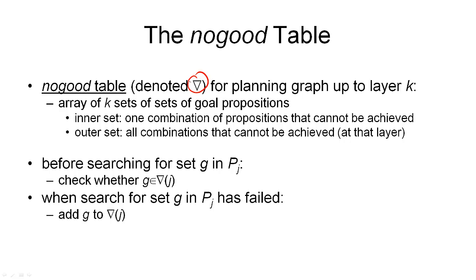So we have k layers in our planning graph, and our array also has length k, which means each of the elements of the array is for a specific layer. And then in each layer, we have a set of sets of goal propositions.